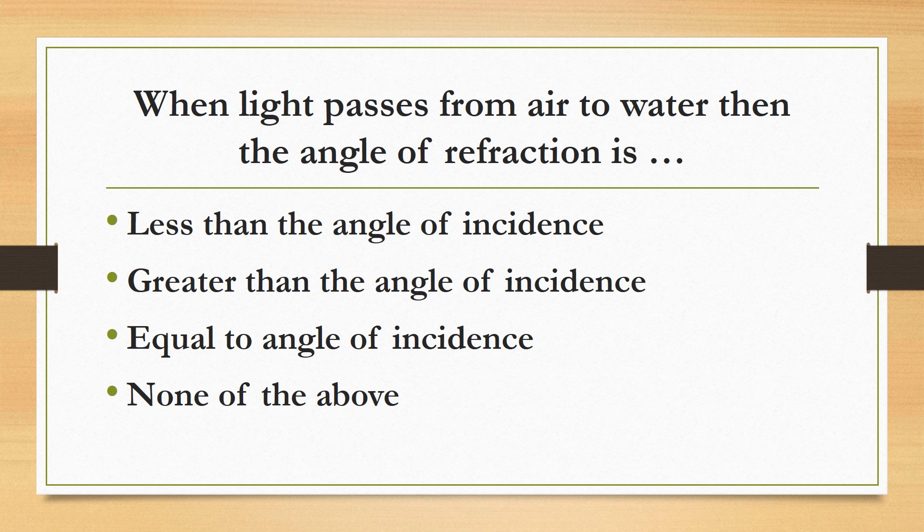When light passes from air to water, then the angle of refraction is: less than the angle of incidence, greater than the angle of incidence, equal to the angle of incidence, none of the above. The correct answer is less than the angle of incidence. When light passes from a rarer to a denser medium, it will bend towards the normal, so the angle of refraction is less than the angle of incidence.